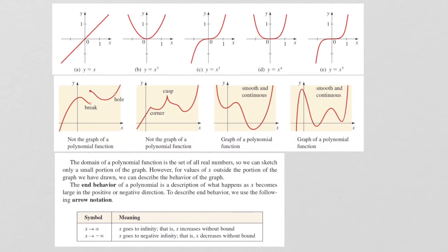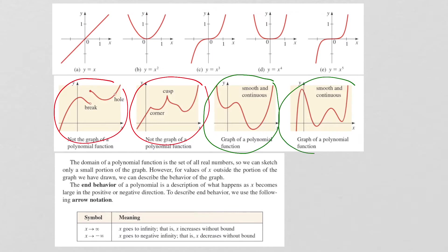In terms of graphs of polynomial functions, polynomials are nice, smooth, continuous curves. Certain graphs are not what polynomial functions look like — polynomial graphs are smooth and continuous, meaning you can draw them without lifting your pencil off the paper. There are no sharp points, no breaks in the graph, and no corners. Everything is nice, smooth, and continuous.